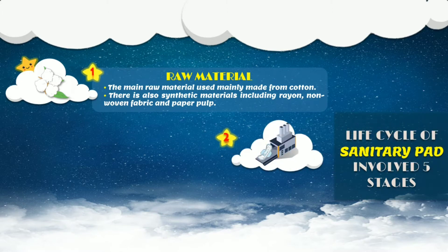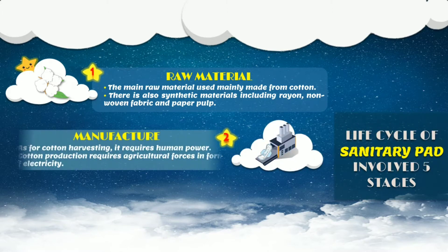As for the second stage, it is on manufacture. The manufacturing of sanitary pad includes cotton harvesting, which requires human power. Cotton production also requires agricultural forces in the form of electricity.